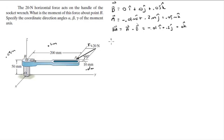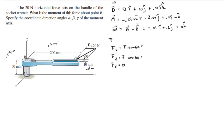The force F has an x, y, and z component. The z component is 0 because it acts in the x-y plane. Fx is given by F sine of 60° which is 17.3 Newtons, and Fy is given by F cosine of 60° which is 10 Newtons, but it's in the negative y direction, so it's negative 10 Newtons. The Cartesian vector form is 17.3i minus 10j plus 0k.